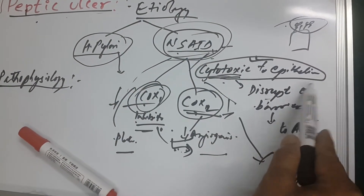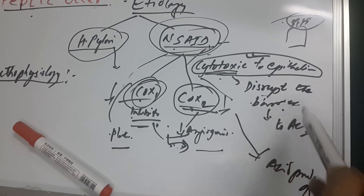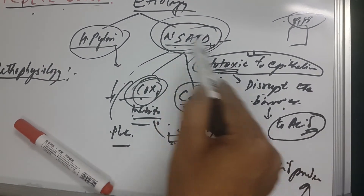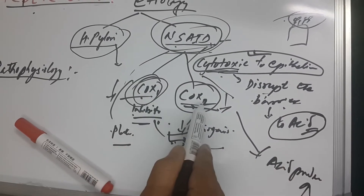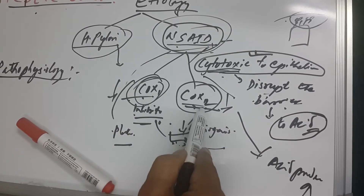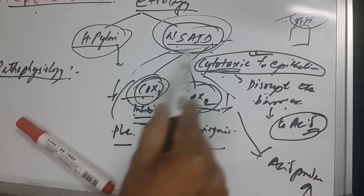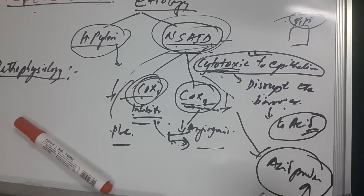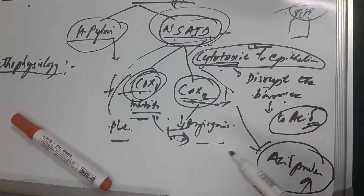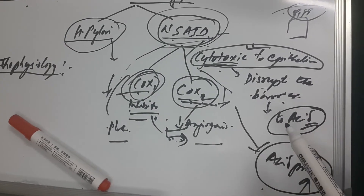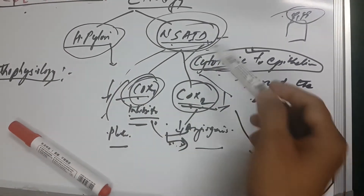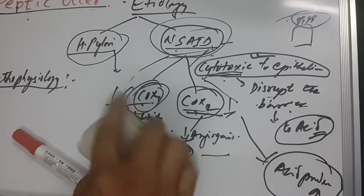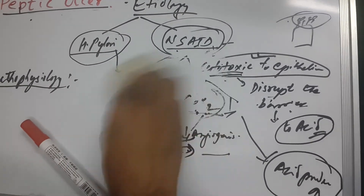To summarize the NSAID etiology: NSAIDs are cytotoxic to the epithelium, disrupting the barrier and causing exposure to acids. Additionally, through COX-1 and COX-2 inhibition, acid production increases. The destruction of the epithelial cell barrier leads to peptic ulcer formation.